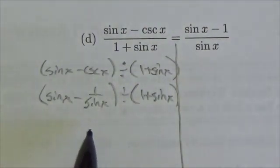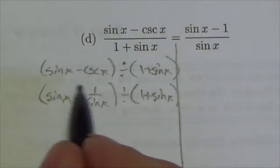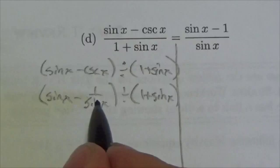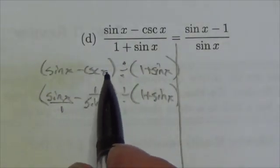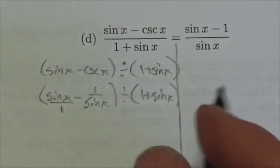Now do I see any Pythagorean identities? Nope. Do I see any obvious algebra? Yep. Because in this first set of parentheses here I've got two terms that I need to add together. This is like sine of x over 1 minus 1 over sine of x. So I've got common denominators here.